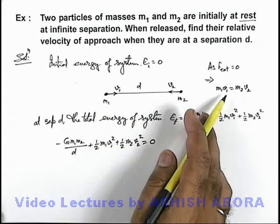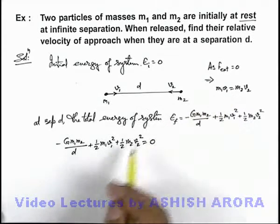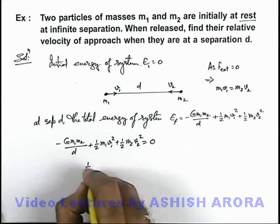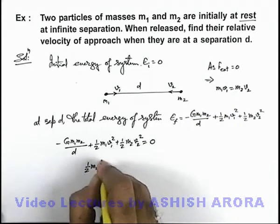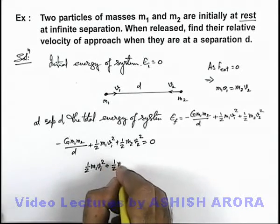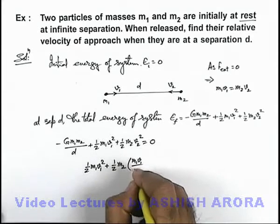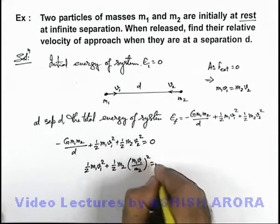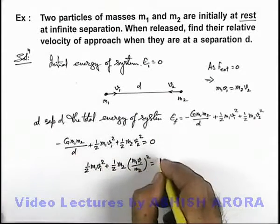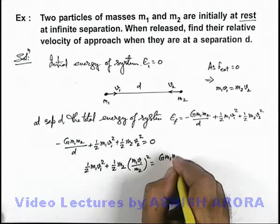So from here we can substitute the value of v2 here. So we'll get half m1 v1 square plus half m2, and v2 we can substitute from here as m1 v1 by m2 square, is equal to, we can take this term on right hand side, it is G m1 m2 by d.